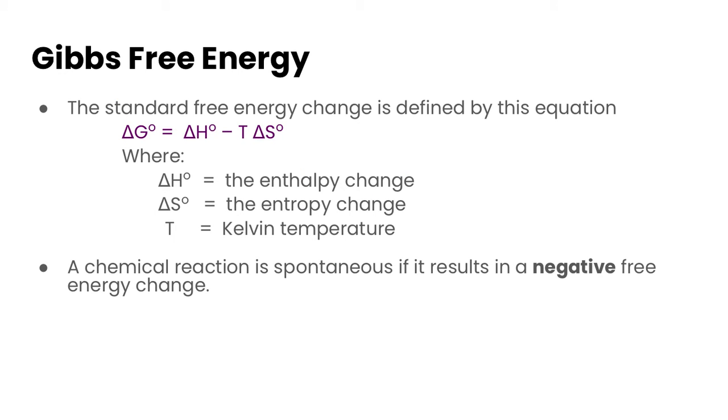Now Gibbs free energy is defined as the standard free energy change or ΔG° is equal to the enthalpy change minus the temperature times the entropy change. So the ΔH° is the enthalpy change that's usually given in kilojoules per mole, and the temperature must be in Kelvin. So if you notice here we've got kilojoules and we've got joules, so we need to make sure we account for those unit changes in our calculation.